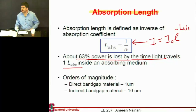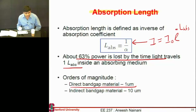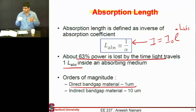This is heavily dependent upon what kind of material you are using. If you're using a direct band gap material, your absorption length is on the order of one micron. So you'll absorb 63% of the light within one micron of the material — you need much less of it, and you can make a high efficiency cell with a very small volume of material.